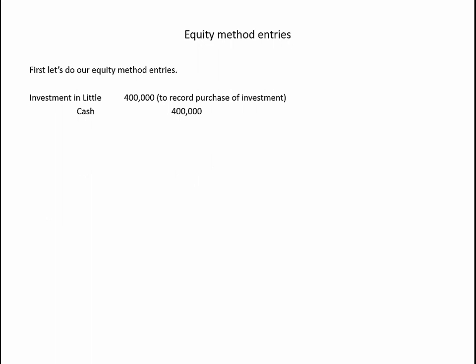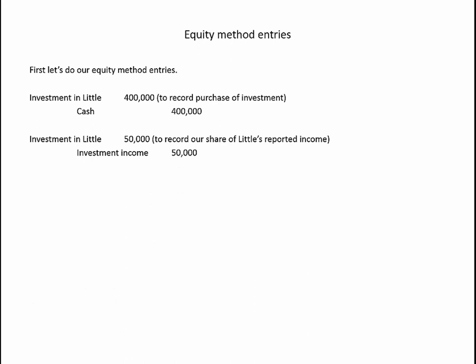Let's go ahead and run through our equity method entries. First, we need to record our purchase of the investment — a debit to Investment in Little for $400,000, the cost of our acquisition, and a credit to cash. Next, we need to report our share of their income. Under the equity method, we're going to be doing this over and over again: income, dividends, amortization. Little Company reported earnings of $50,000. We're the sole shareholder, so we have investment income of $50,000. Income increases Little's owner's equity, which means our investment in Little, which represents our ownership of their equity, increases proportionally.